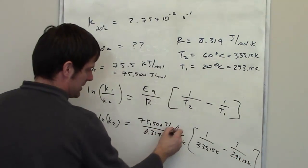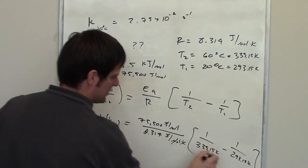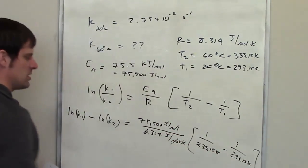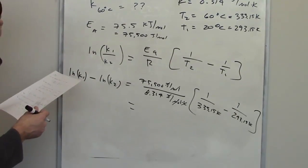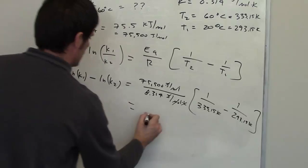The moles, you'll notice, cancel each other out, and the joules cancel each other out. The kelvins also will eventually cancel each other out once I'm all done doing the multiplications. Now I did that in my calculator.